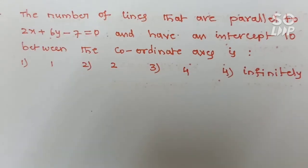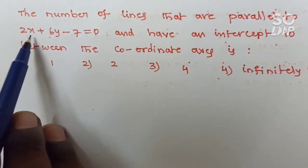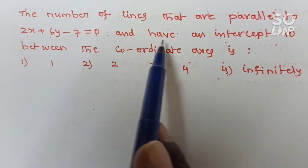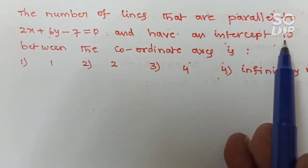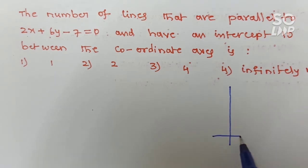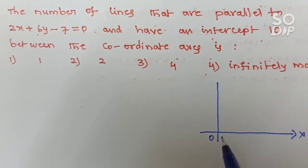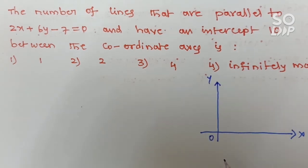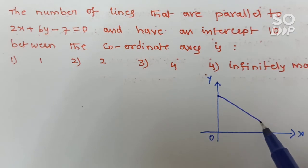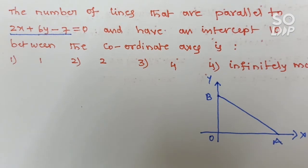This next question is very important. Find the number of lines that are parallel to 2x plus 6y minus 7 equals 0 and have an intercept of 10 between the coordinate axis. Parallel lines differ only in their constant term. So the equation of any line parallel to 2x plus 6y minus 7 equals 0 is 2x plus 6y plus K equals 0.